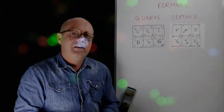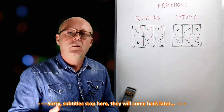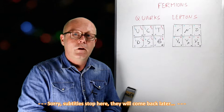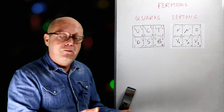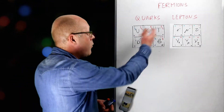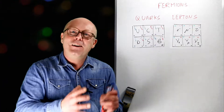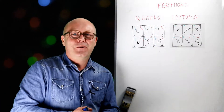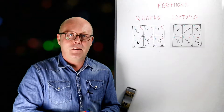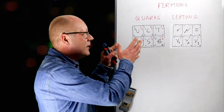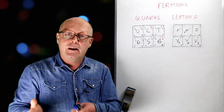We have discussed up to now the 17 particles which are part of the Standard Model. We have seen there are fermions, bosons, and in the fermions there are quarks and leptons. But we have neglected a whole bunch of particles — the mirror version of these particles. We have discussed matter, but there is also antimatter that exists.